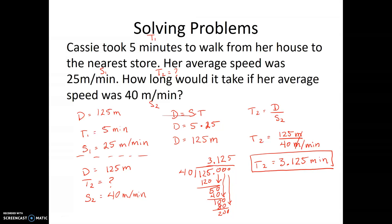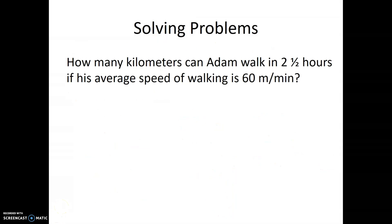The next problem, number 11, is extra tricky and we'll do that together. It says how many kilometers can Adam walk in two and a half hours if his average speed of walking is 60 meters per minute? This looks like an easy problem at first glance, doesn't it? Just a distance problem.